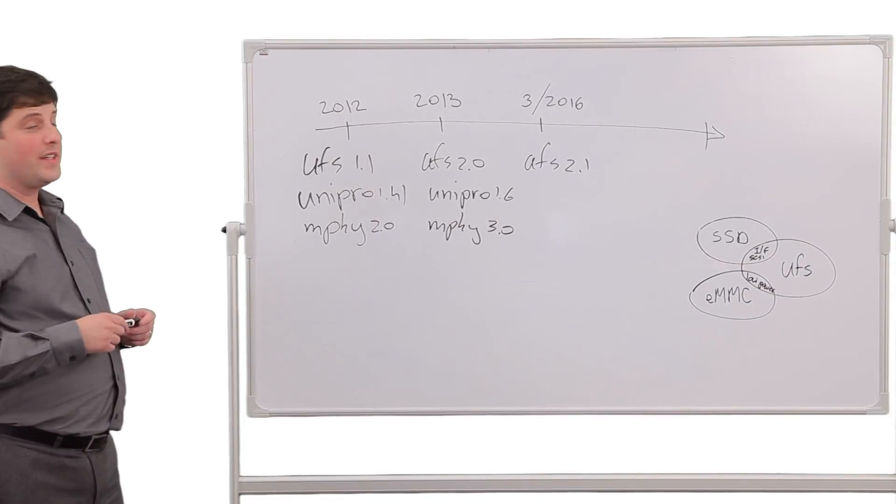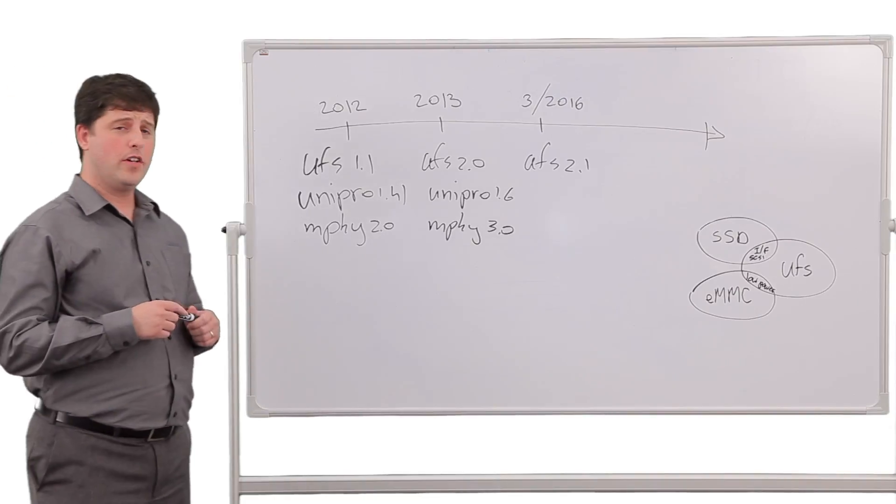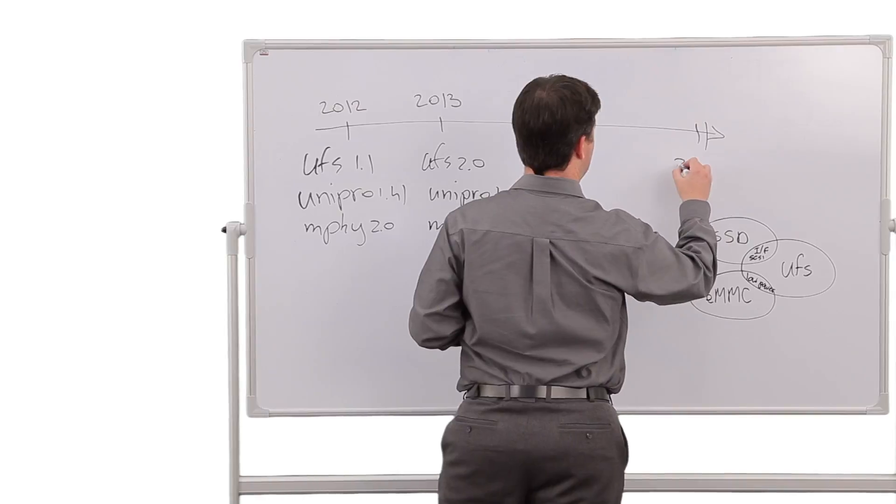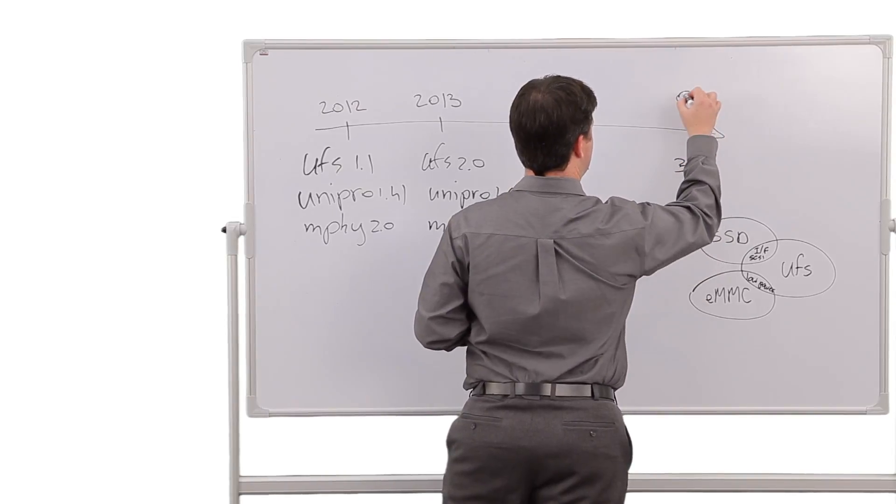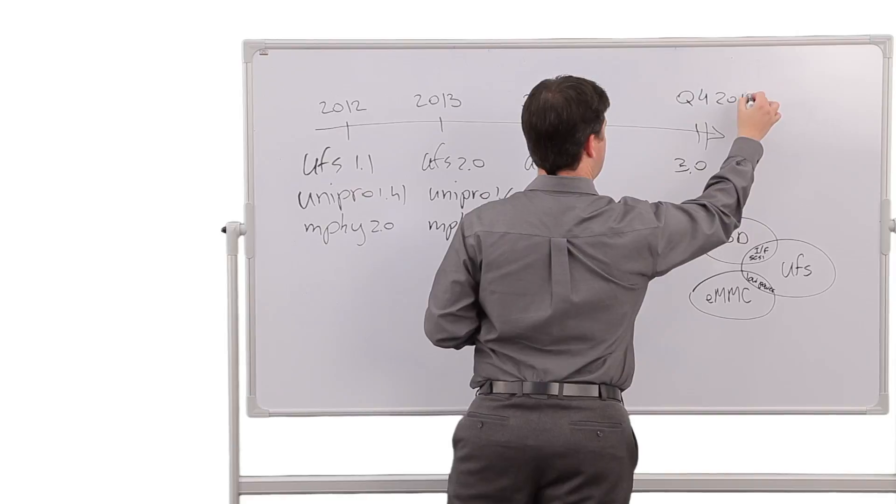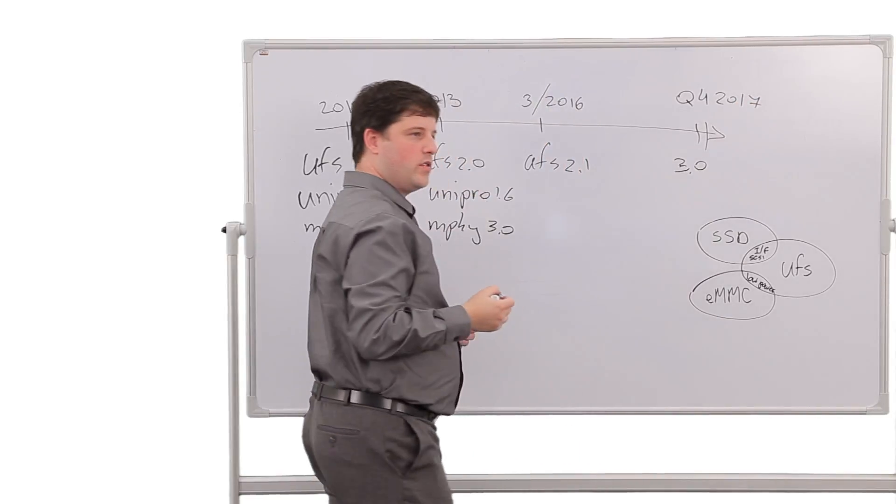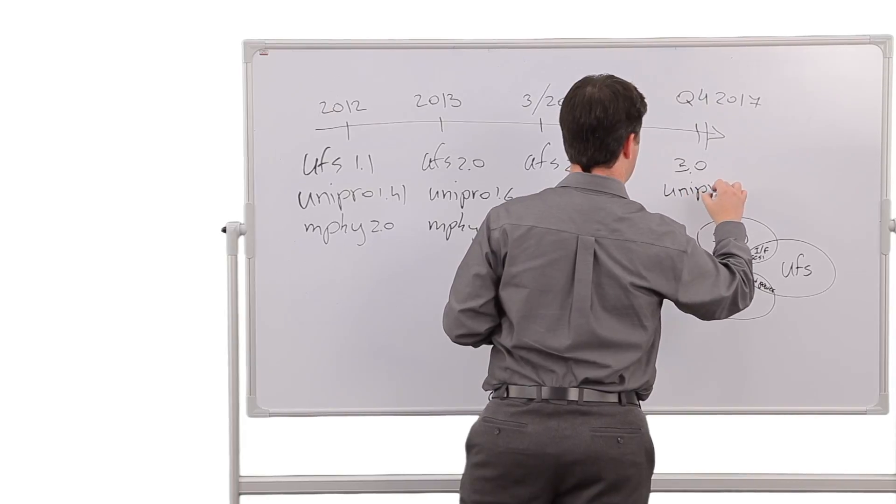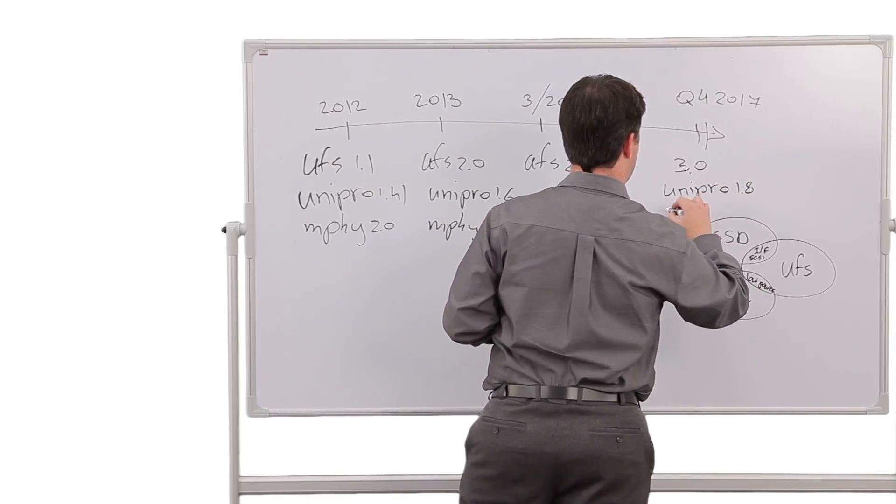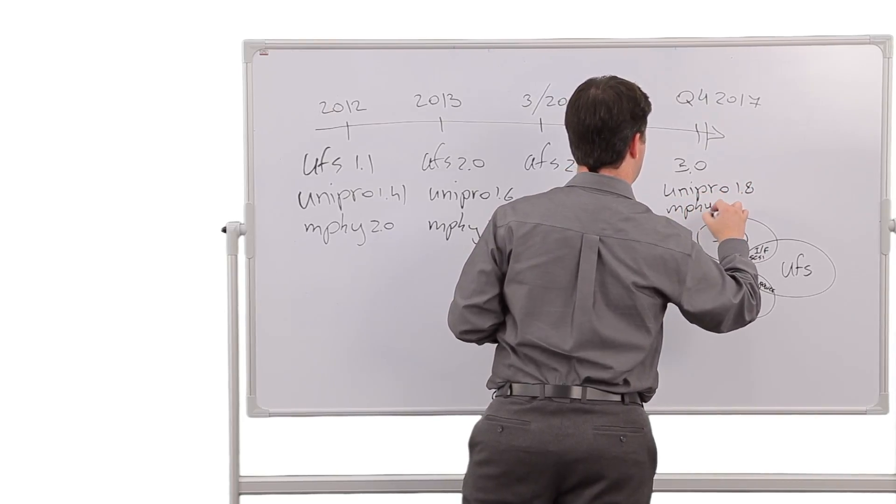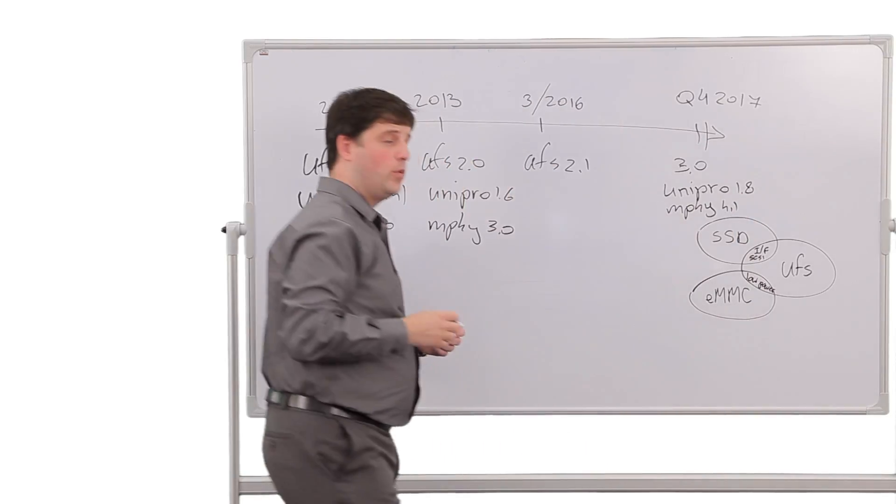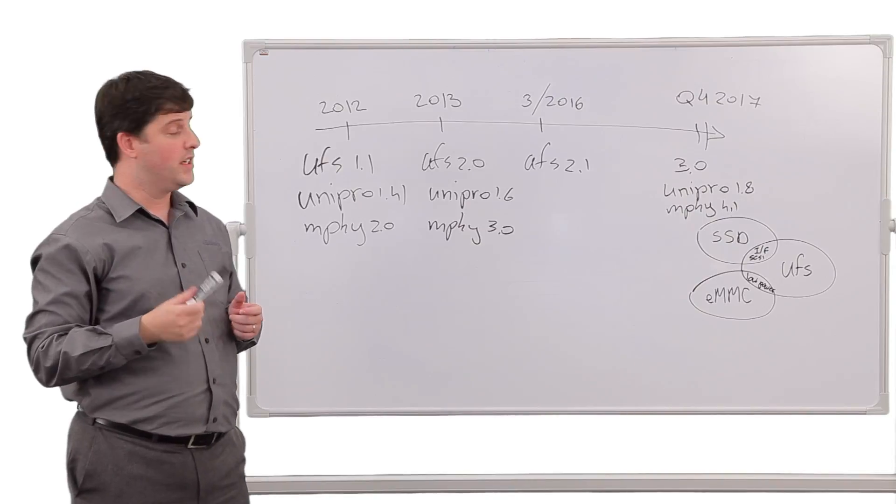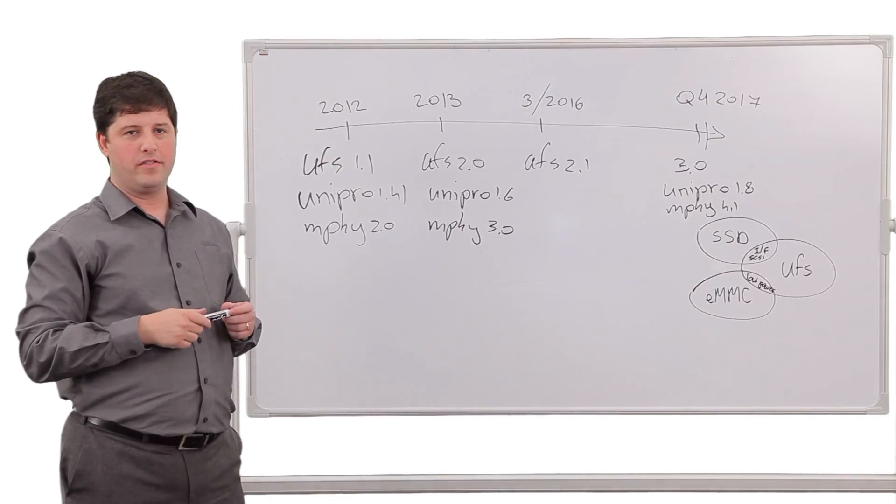So, what's next? Currently under development is UFS 3.0, which is expected to be public by the end of 2017. UFS 3.0 is expected to use Unipro 1.8 and Mphi 4.1, and with that, it will be able to provide transmission of up to 23 gigabit per second using two lanes to support 5G.